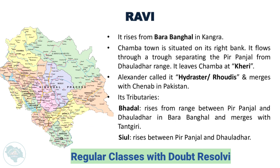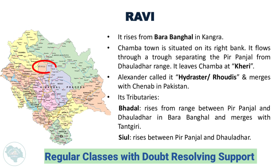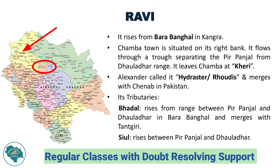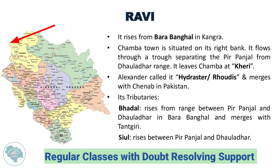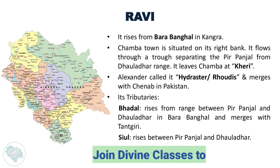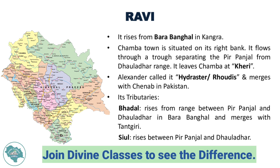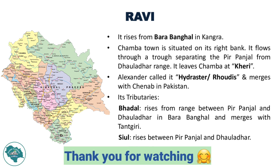Finally, Ravi River rises from Bara Bangal in Kangra. Chamba town is situated on its right bank. It flows through a trough separating the Pir Panjal from the Dholadhar range and leaves Chamba at Kheri. Alexander called it Hydraster or Rowdies. It merges with Chenab in Pakistan. Major tributaries of Ravi include Bhadal, which rises from the range between Pir Panjal and Dholadhar in Bara Bangal and merges with Tantagiri; Sioul, rising between Pir Panjal and Dholadhar; and others such as Bara, Tantagiri, and Budil.